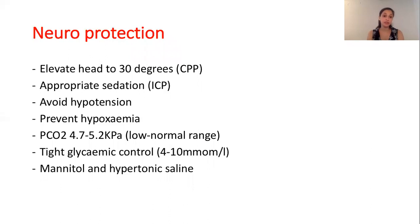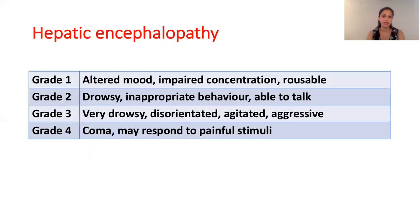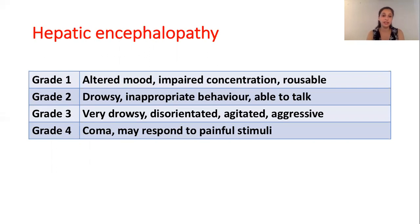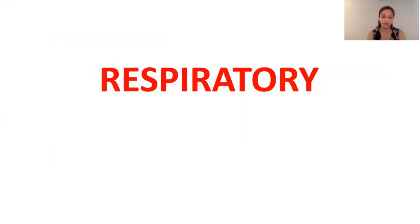When giving mannitol, do not give it to a patient who is oliguric and not on CVVH, as this can worsen their renal function. Hepatic encephalopathy is broken down into four grades — grade 1, 2, 3, and 4 as shown on this slide. Grade 3 and 4 are the ones we are concerned about as anaesthetists, and these require intubation and ventilation.